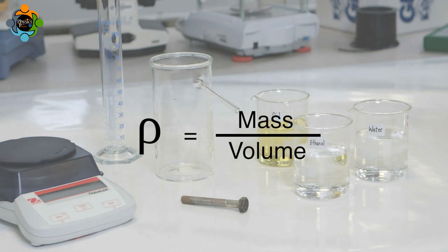Density is calculated using this equation: mass divided by volume, and has the unit grams per centimeter cubed.